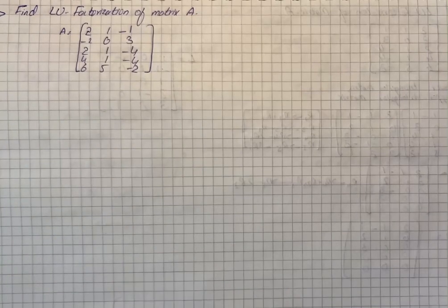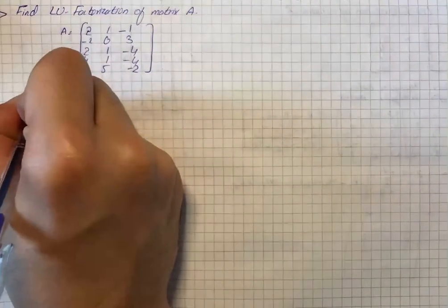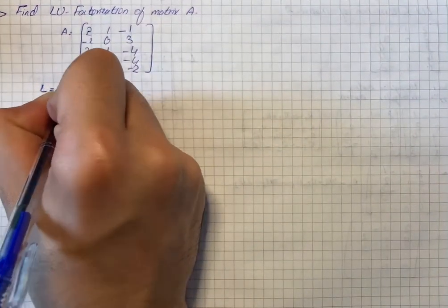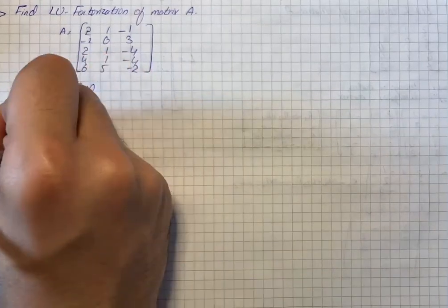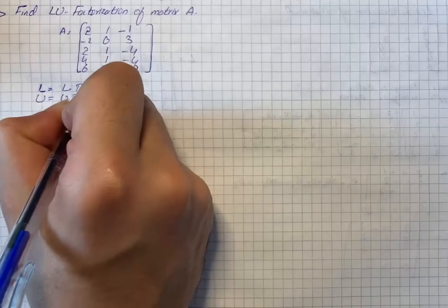Here we have a question that says find LU factorization of matrix A. First of all we will let L equal to lower triangle matrix and U equal to upper triangle matrix.